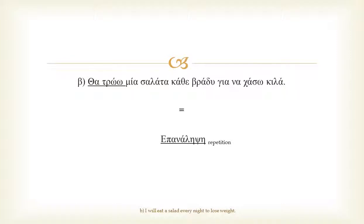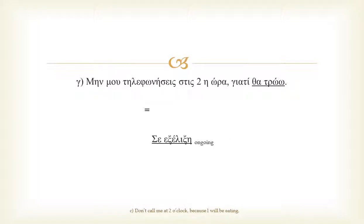In example β, we are using the continuous form, because eating will happen several times — every evening. Whereas in the third example, we are using the continuous form once again, because eating will be in process at a particular time, 2 o'clock.